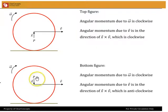In the bottom figure where P is above the center of the disk, omega direction does not change. But you can see that x bar cross v bar now is anticlockwise.